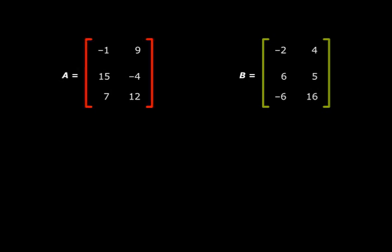So look at matrix A. Its order is 3 by 2. And now look at matrix B. Its order is also 3 by 2. So this means that we can actually subtract one matrix from the other matrix.